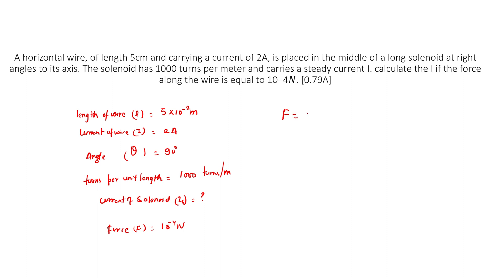Using the formula: F = BIL sin theta. The magnetic field B of the solenoid is given by B = μ₀nI, where μ₀ is the permeability of free space and n is the number of turns per unit length.